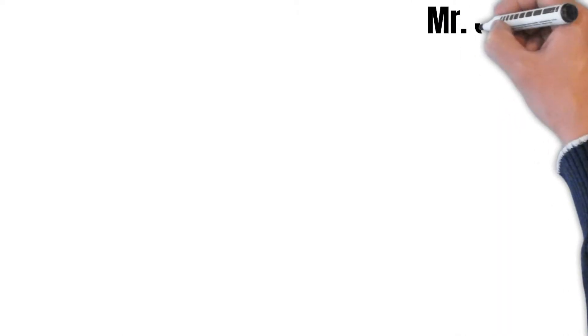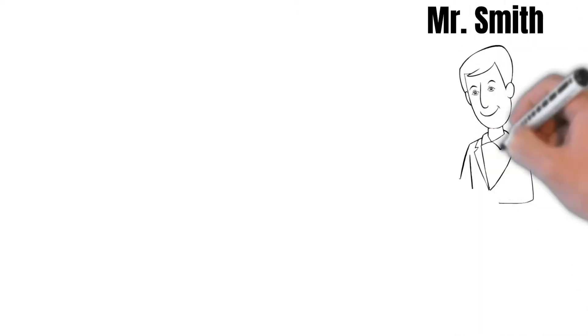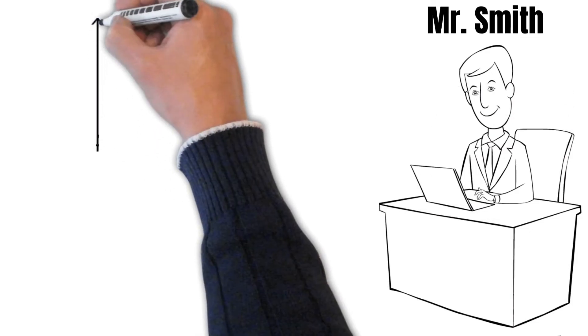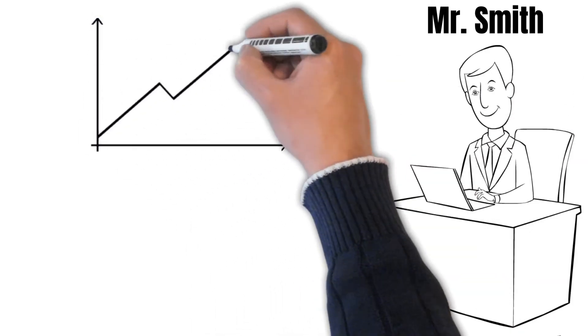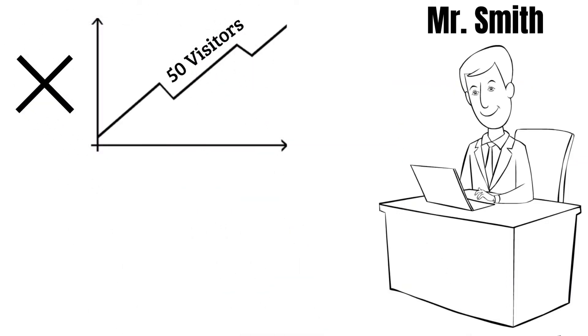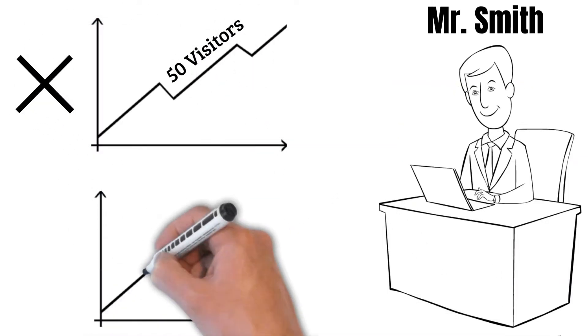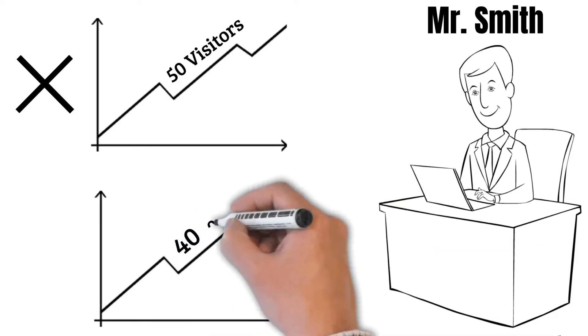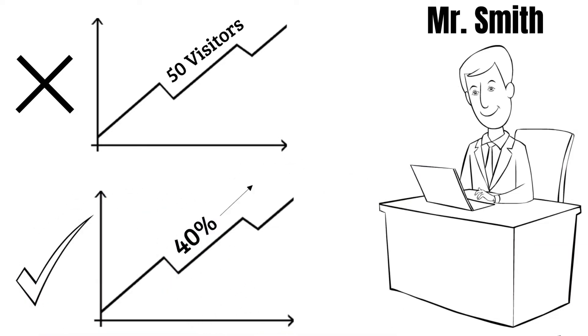Suppose Mr. Smith wants investors to invest in his digital marketing website. When he says month-over-month change in visitors is 50, it does not seem impressive to the investors. But when he says 40% month-over-month growth, investors see a potential to reach 0.7 million visitors in two years' time if the same growth continues.